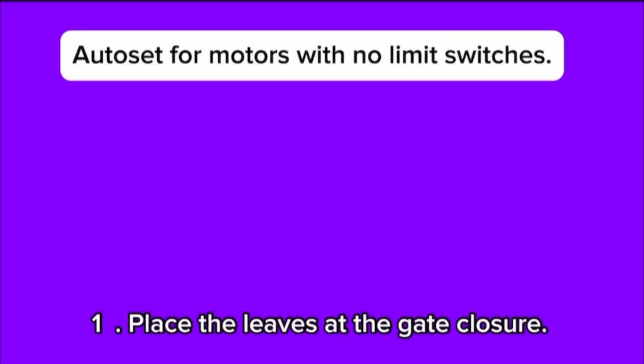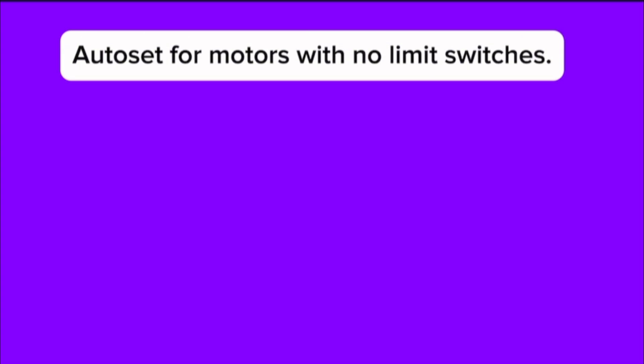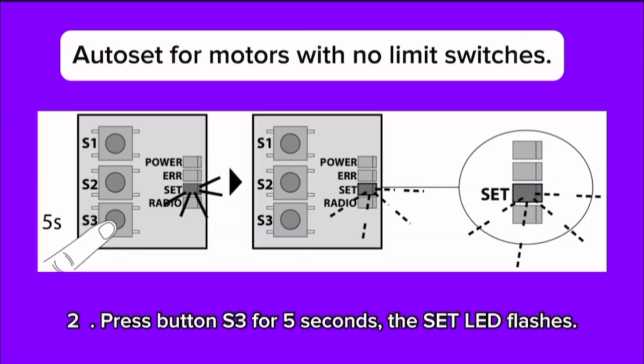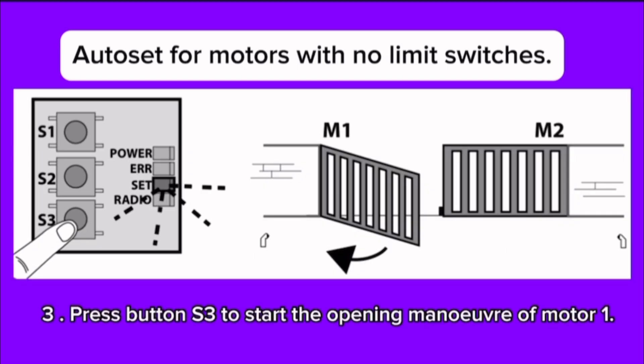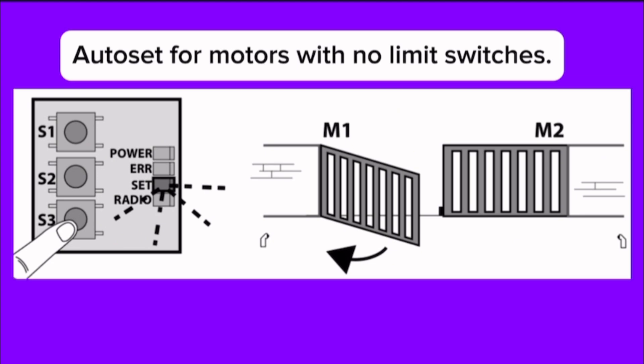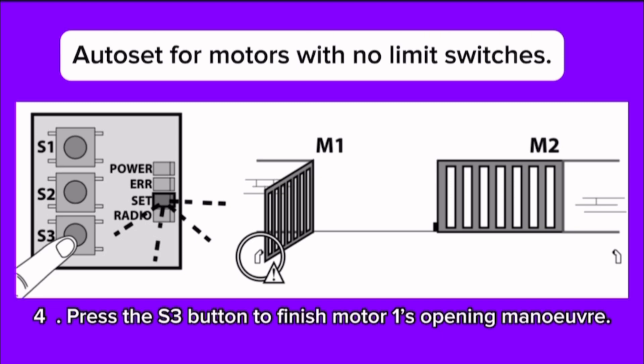Step 1: Place the leaves at the gate closure. Step 2: Press button S3 for 5 seconds. The set LED flashes. Step 3: Press button S3 to start the opening maneuver of motor 1. Step 4: Press the S3 button to finish motor 1's opening maneuver.